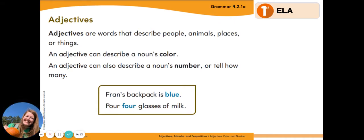What are adjectives? Adjectives are words that describe people, animals, places, or things. Adjectives describe nouns. An adjective can describe a noun's color, or an adjective can also describe a noun's number, or tell how many.